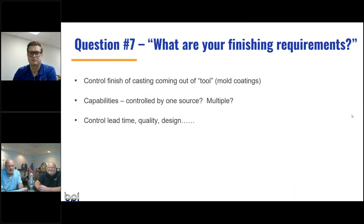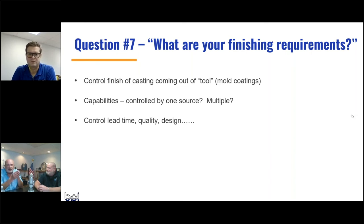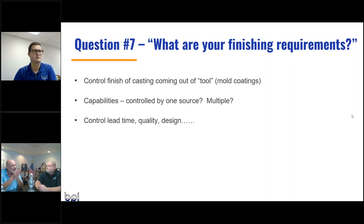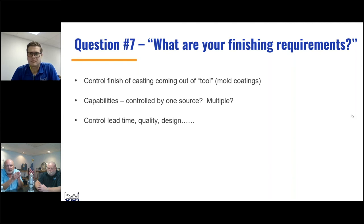Question number seven: what are your finish requirements? Permanent mold gives you a pretty good as-cast surface coming right out of the mold, controlled a lot by the mold coatings and upfront design considerations. The mold coatings are applied and last an entire shift. When we ask for two to four degrees of draft, it's so the mold coatings can last throughout the eight-hour shift without breaking down.